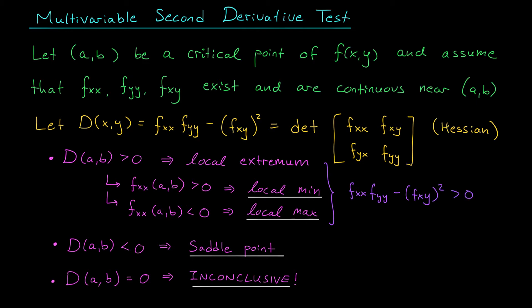But hold on a second. Minus fxy squared is the negative of something squared. So this is definitely a negative quantity. If this is negative, but the whole expression is positive,